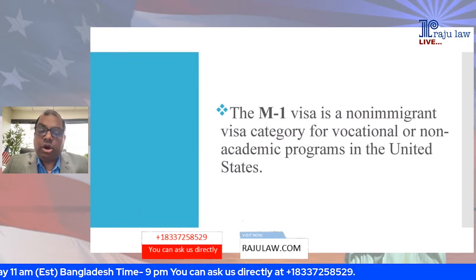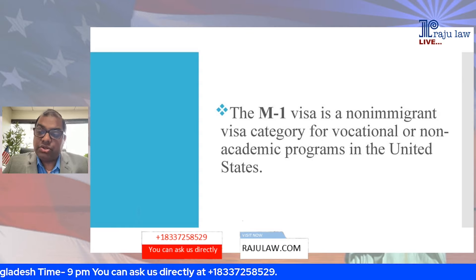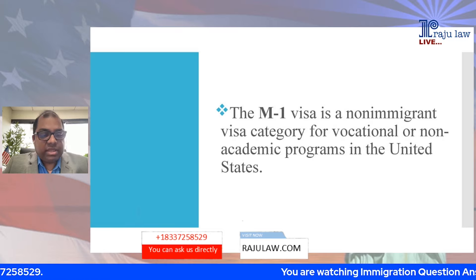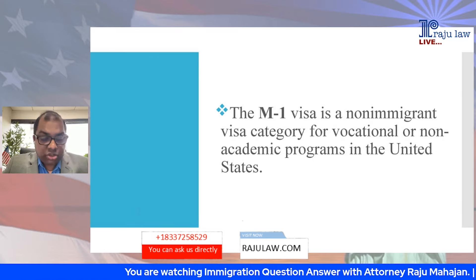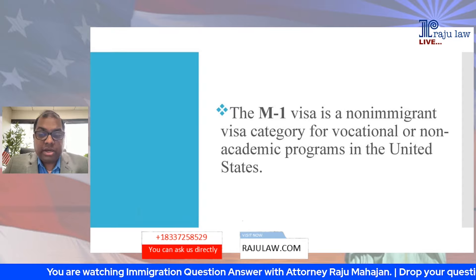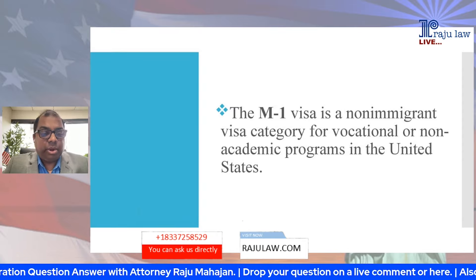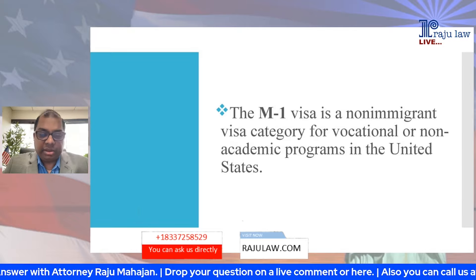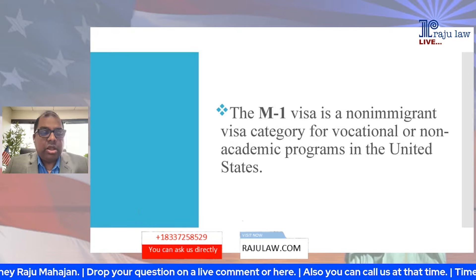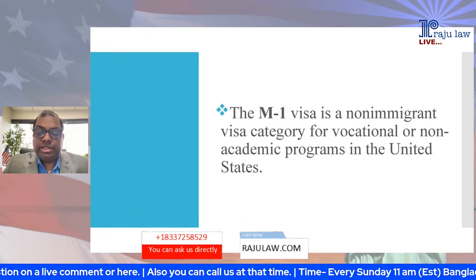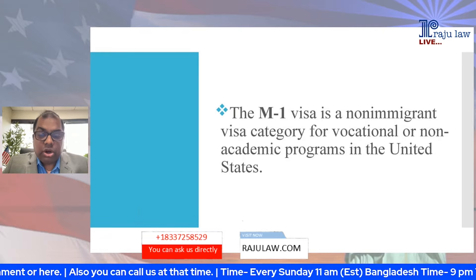The M visa is a non-immigrant visa category for vocational or non-academic programs in the United States. Remember, like F and J visas, this is also a non-immigrant visa, but M visa is specifically for vocational or non-academic programs. F visa is for academic programs, and J1 is an exchange visitor program, but M is for vocational or non-academic programs.